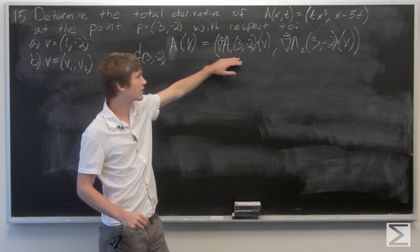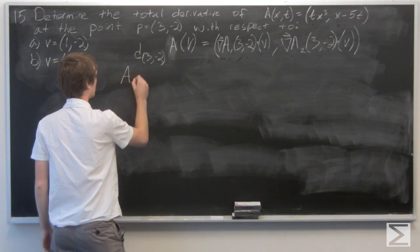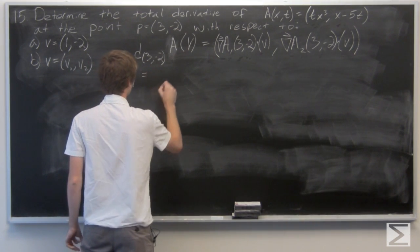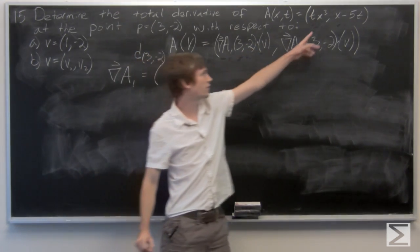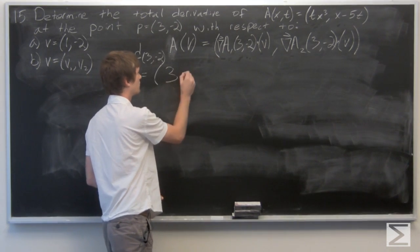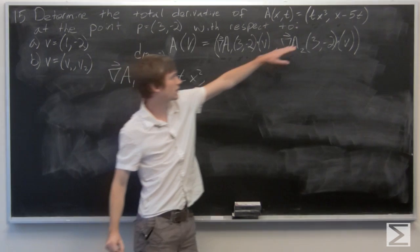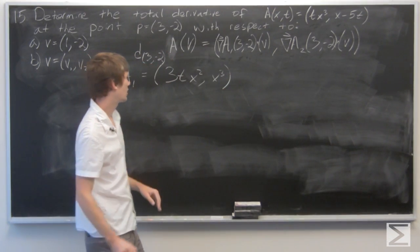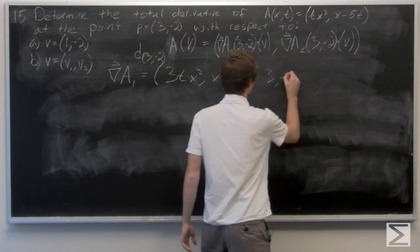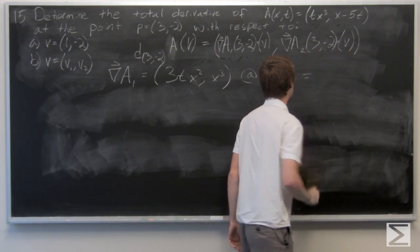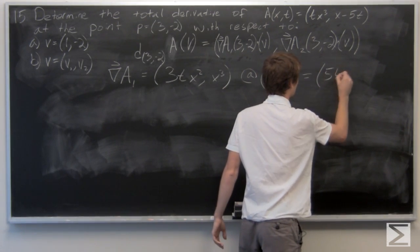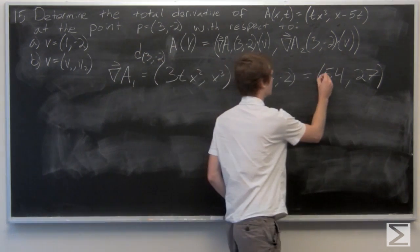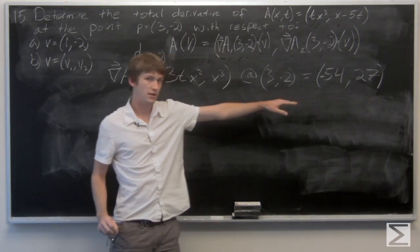So we can first find the gradient vector of each of the components. The partial derivative of the first component with respect to x, and the partial derivative of the first component with respect to t, evaluated at (3, negative 2). We find that gives us (negative 54, 27).